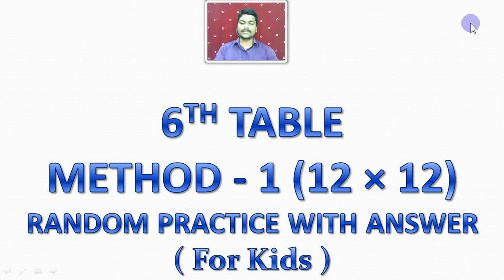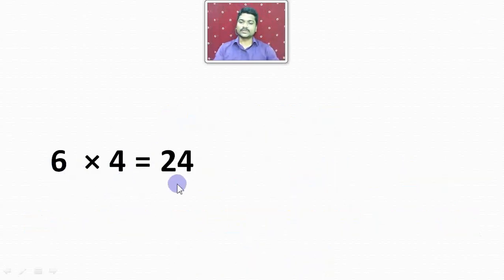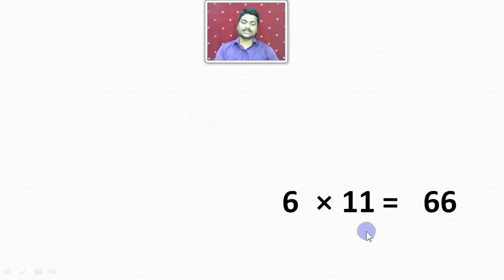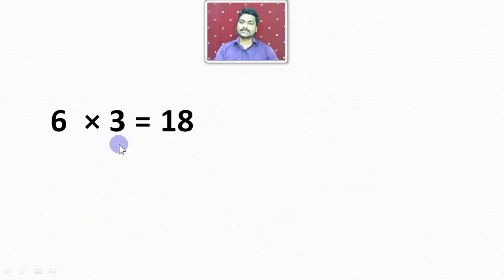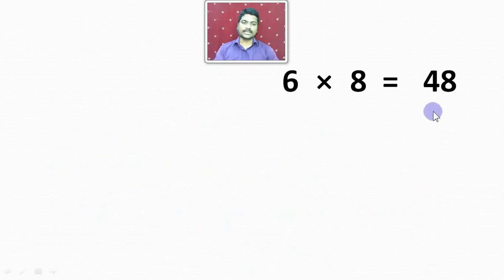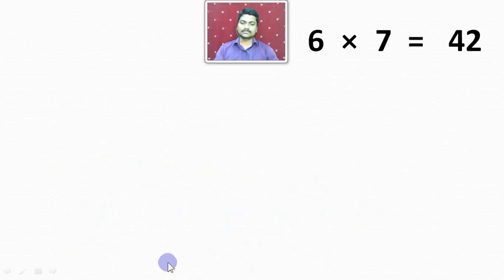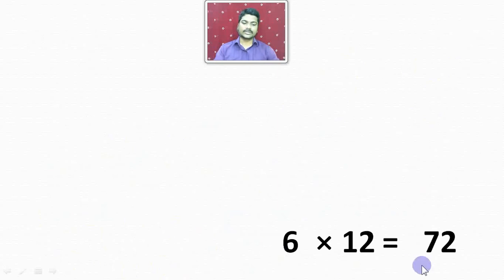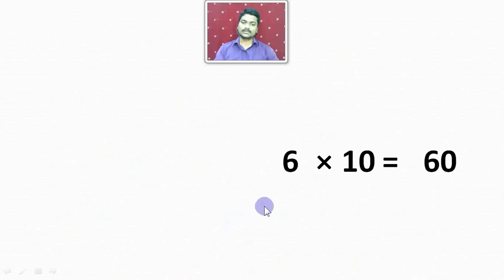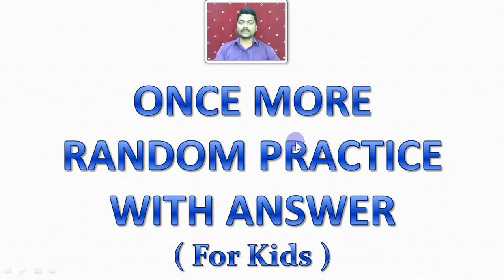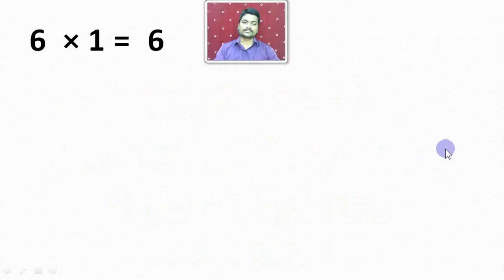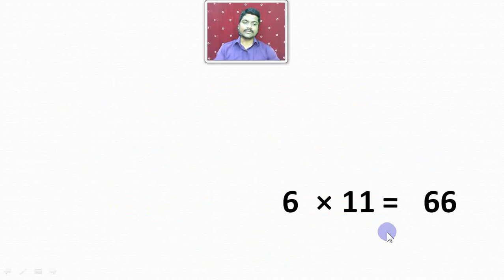6th Table Method 1 Random Practice with Answer. 6 4s are 24. 6 9s are 54. 6 1s are 6. 6 11s are 66. 6 3s are 18.